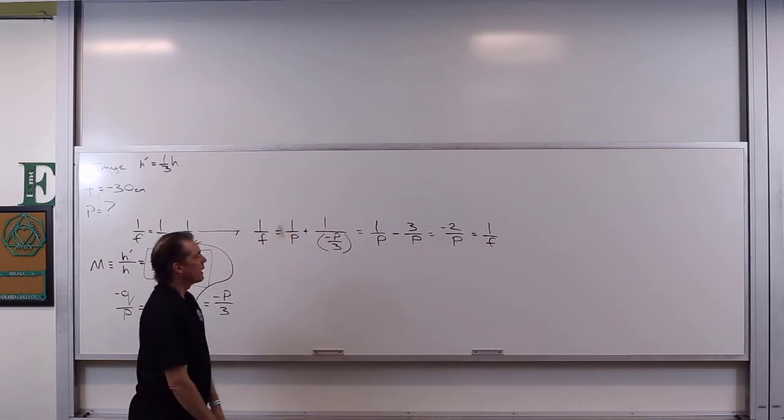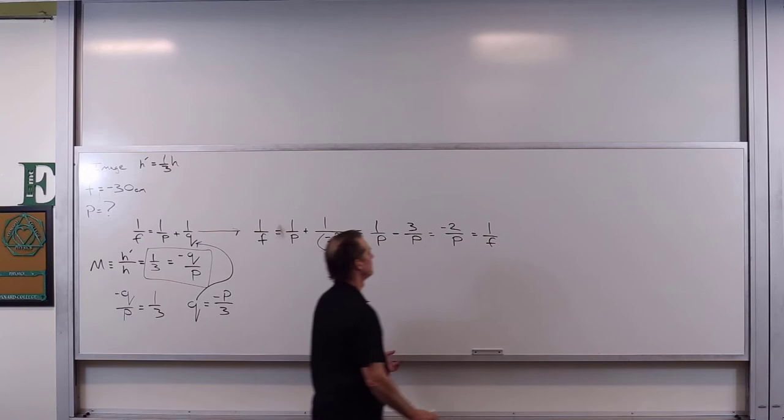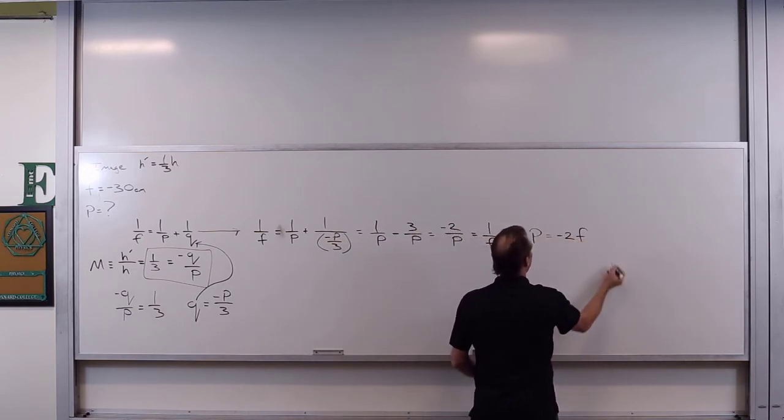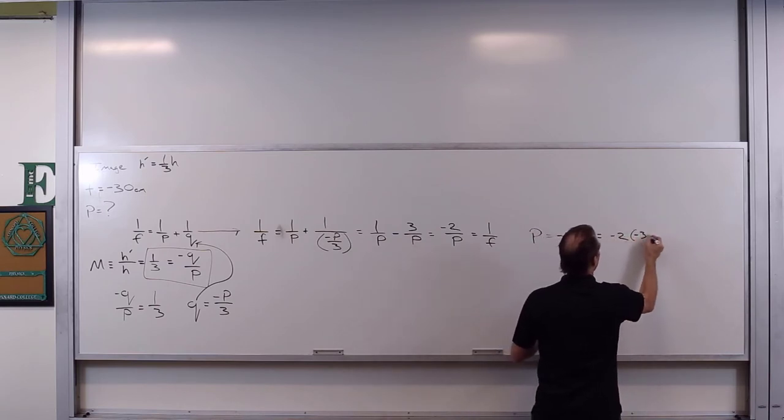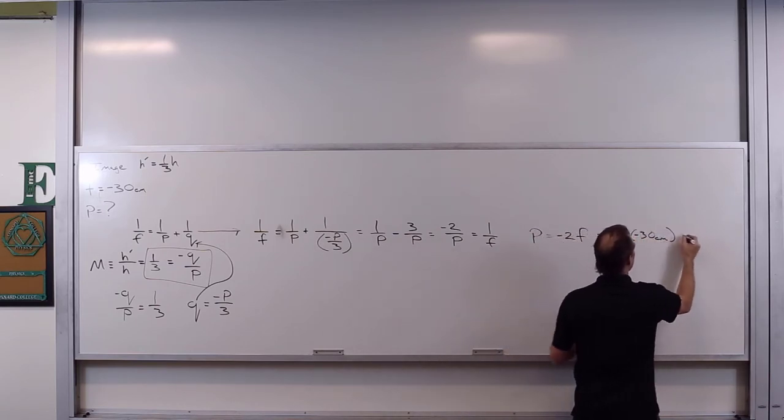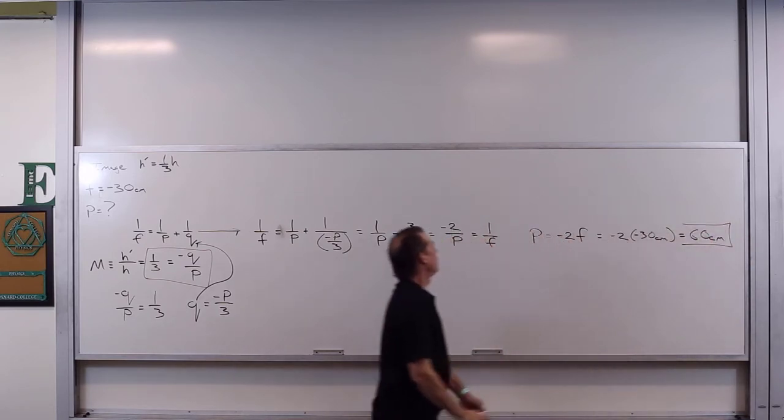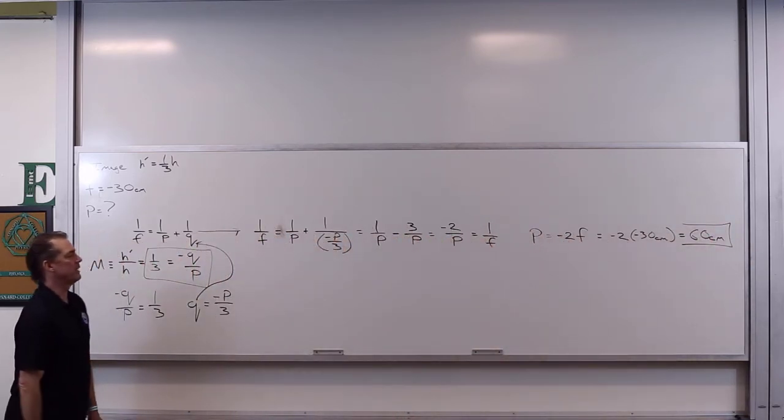So what do we get out of this? We get out of this that p has to be equal to negative two f. Now, p is equal to negative two f is equal to negative two times negative 30 centimeters, which is then equal to 60 centimeters. So there we go. We get ourselves the object distance. Voila!